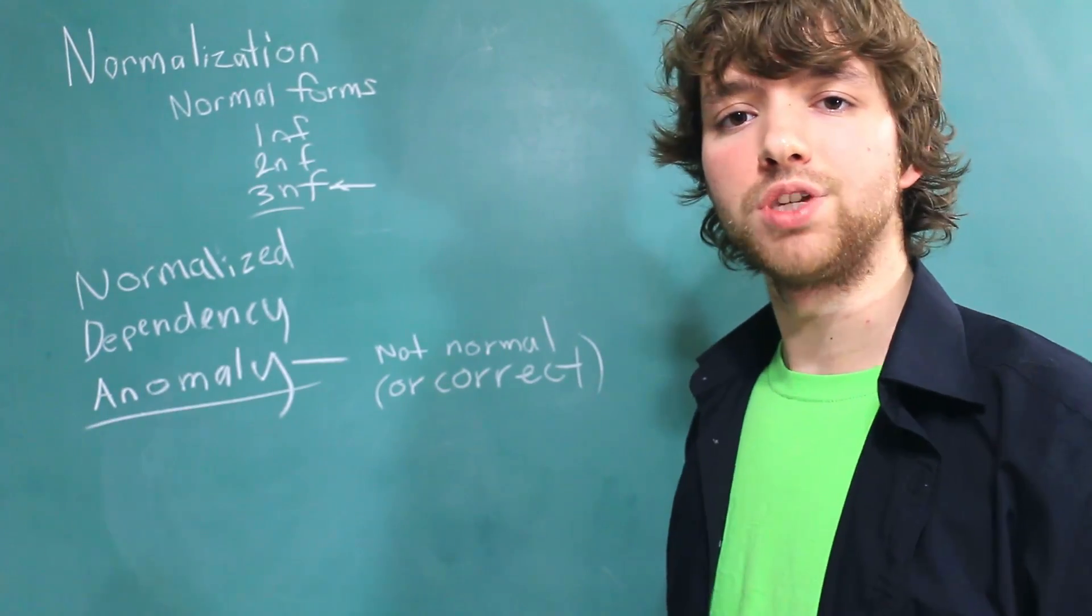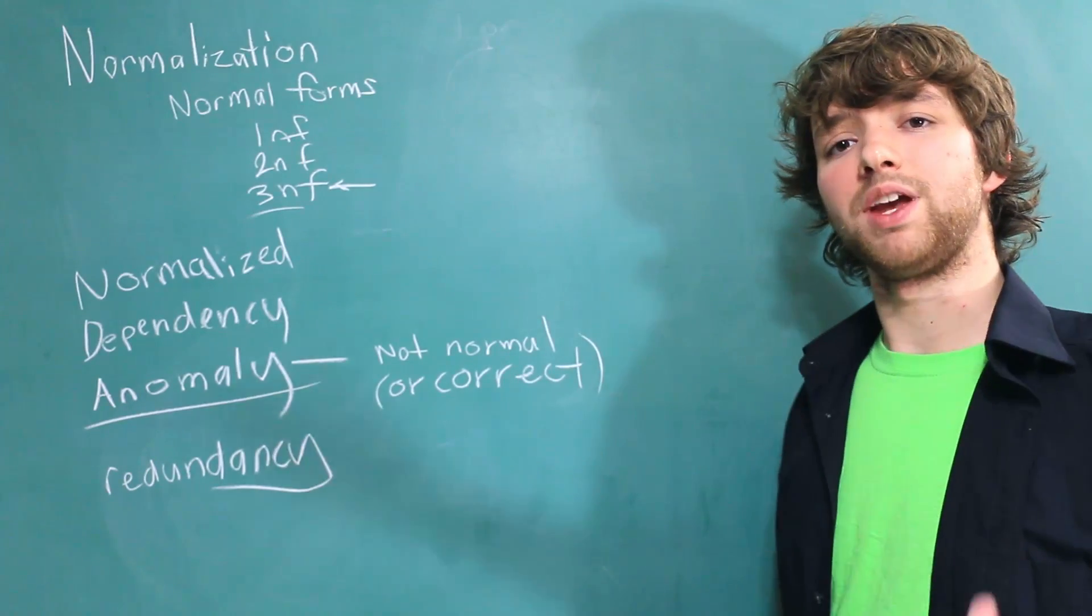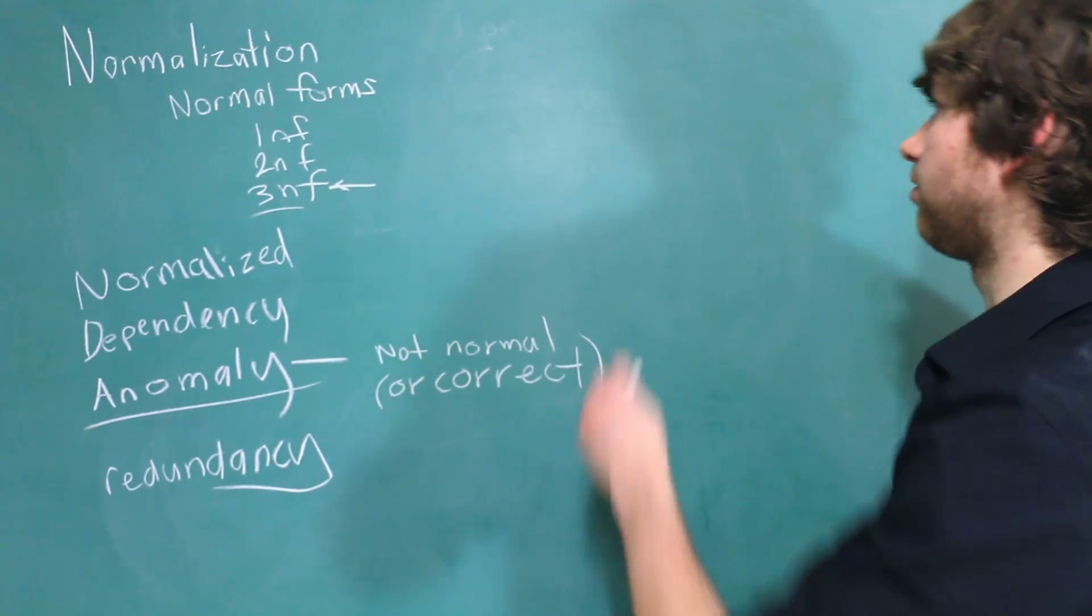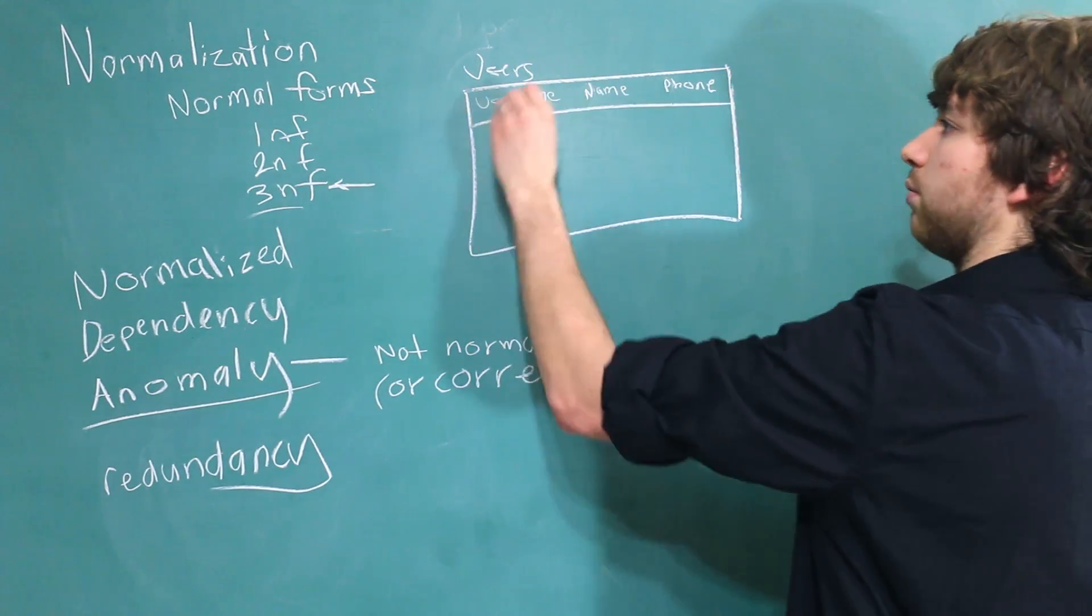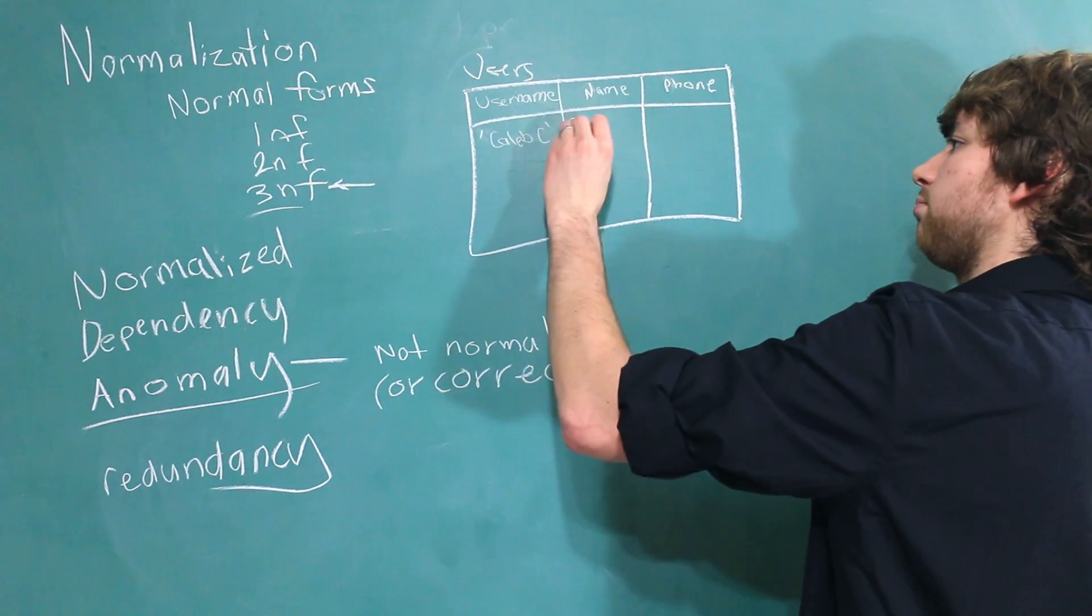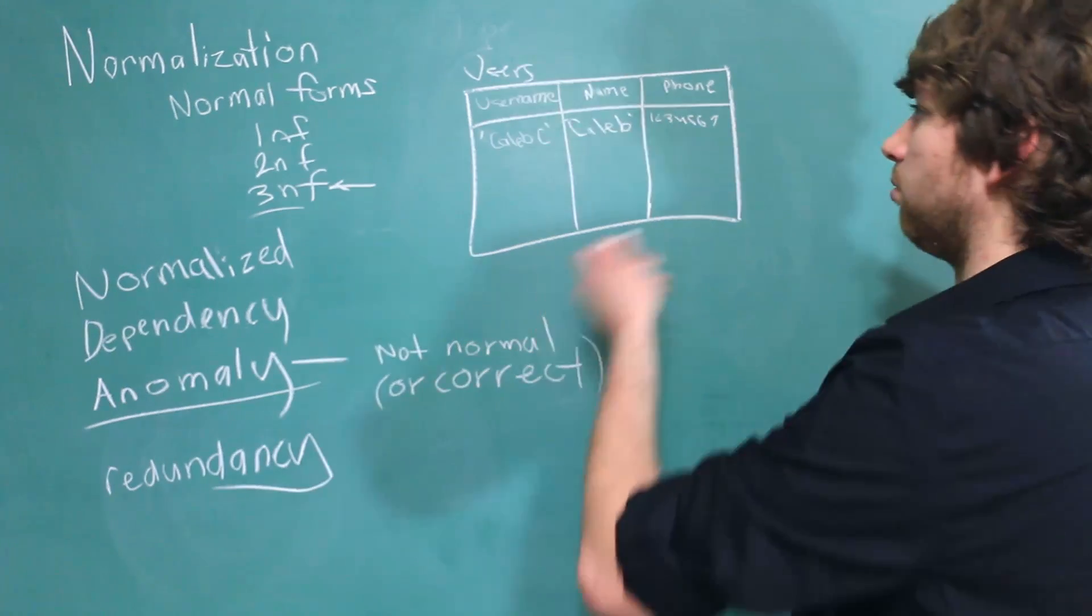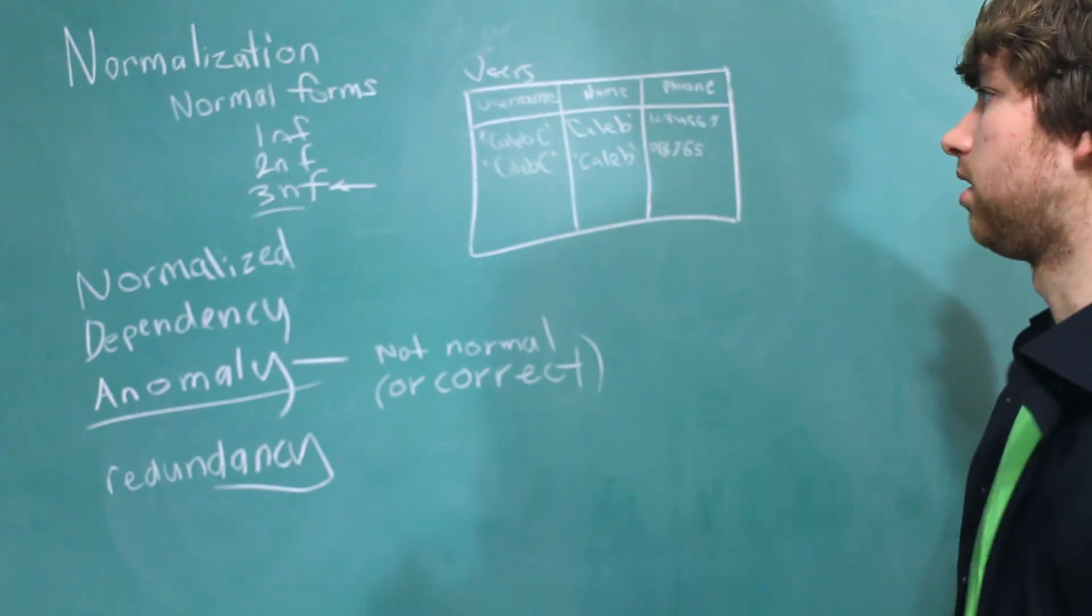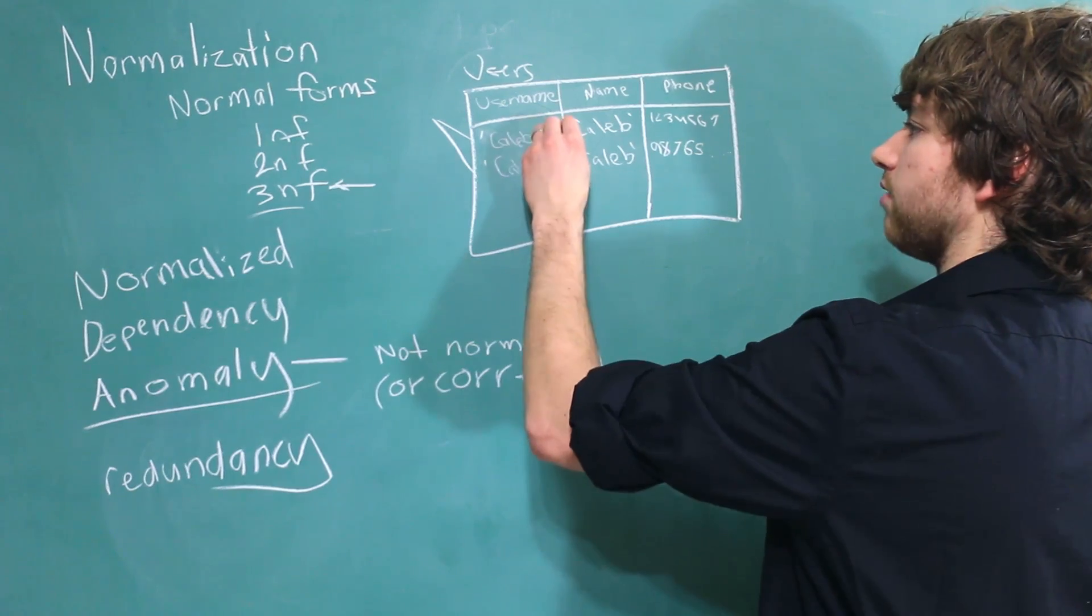How do we get rid of anomalies? By reducing redundancy. What is redundancy? Redundancy is when we have the same information in our database two times or more. You can think of if we had a user table, and let's say we have username, name, and phone. And when we insert data into this, we give a username, we give it a name, and a phone number. And now let's say we want to add a second phone number. Well, let's just add another row. In this situation, we have data redundancy. That's because we have this username in here twice, and we have this name in here twice.